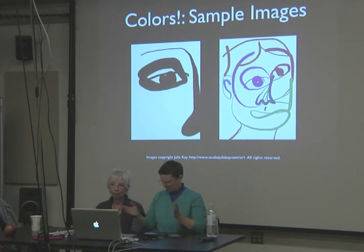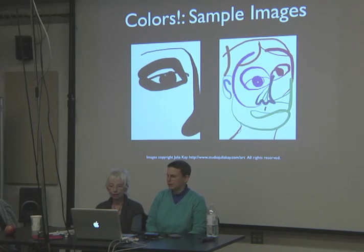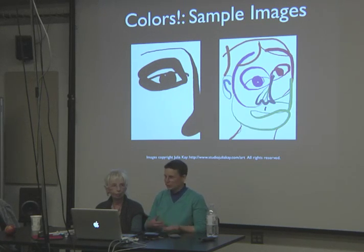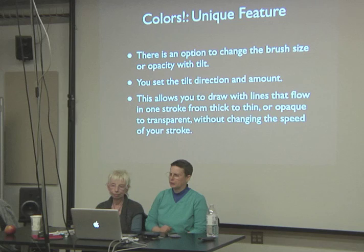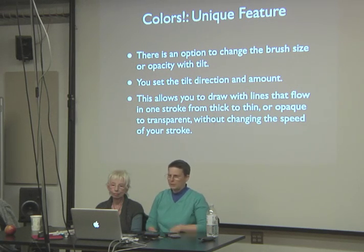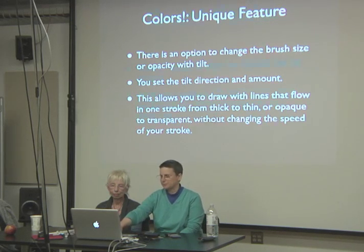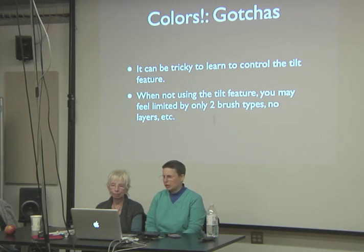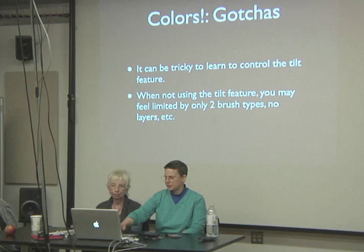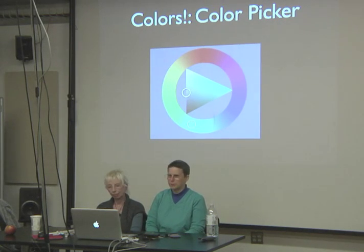Colors was one of the first apps on the market, basically a port from a stylus-based device. I keep it around because you can change line thickness with tilt — going from thick to thin without speeding up your stroke. Unique features: options to change brush size and opacity with tilt; you set the tilt direction and amount in a menu to define begin and end points. This allows you to draw lines that flow from thick to thin in one stroke. Gotchas: tricky to figure out, and only two brush types.